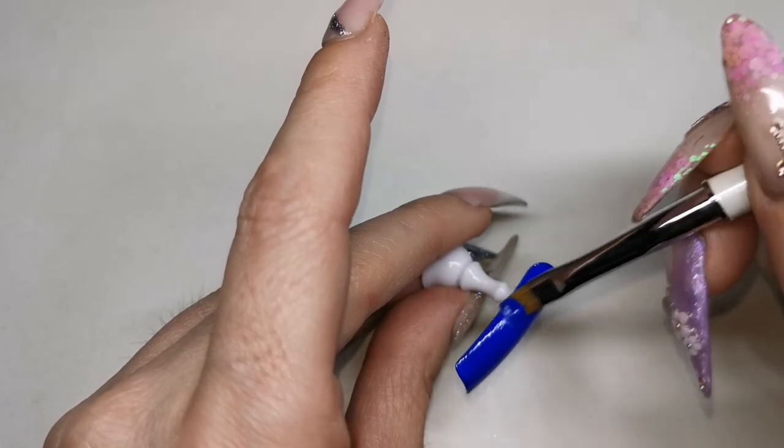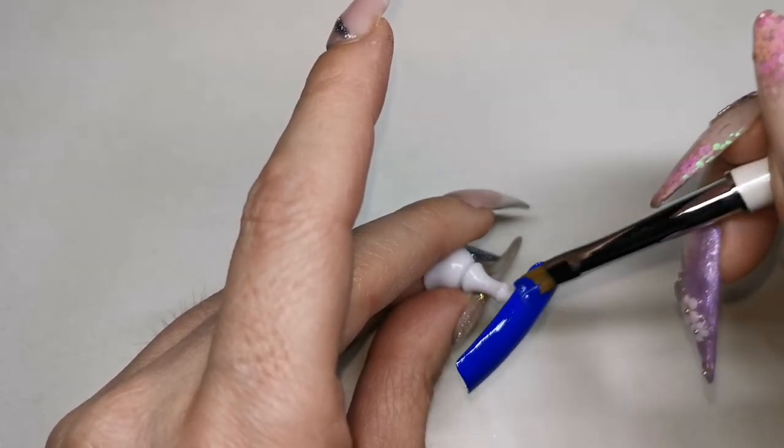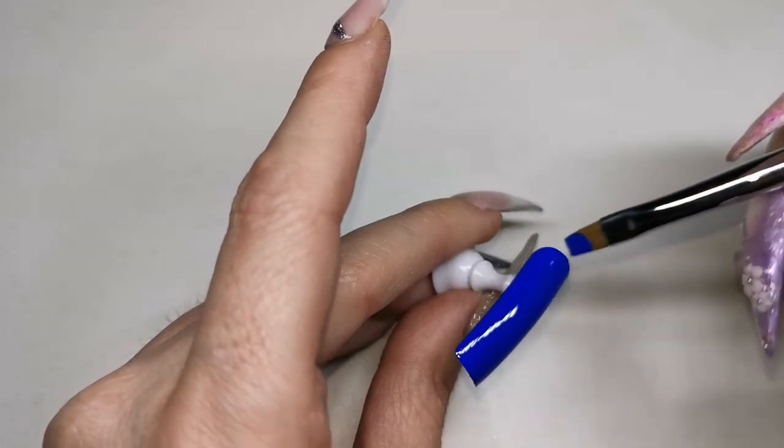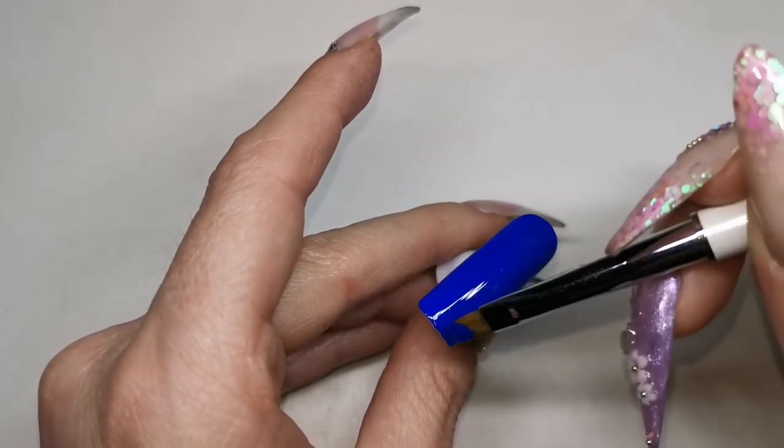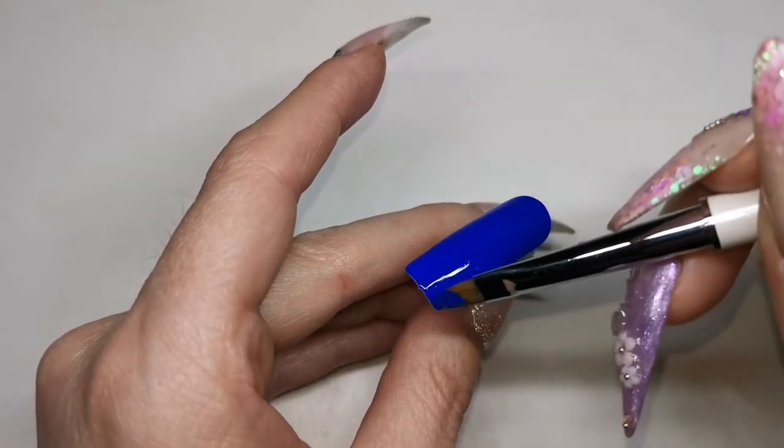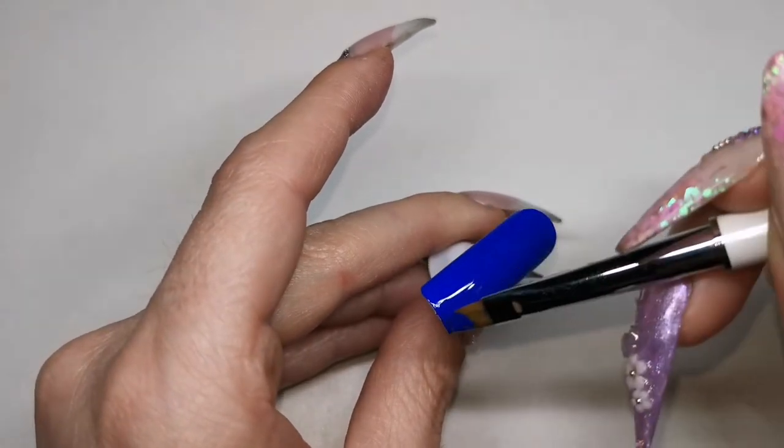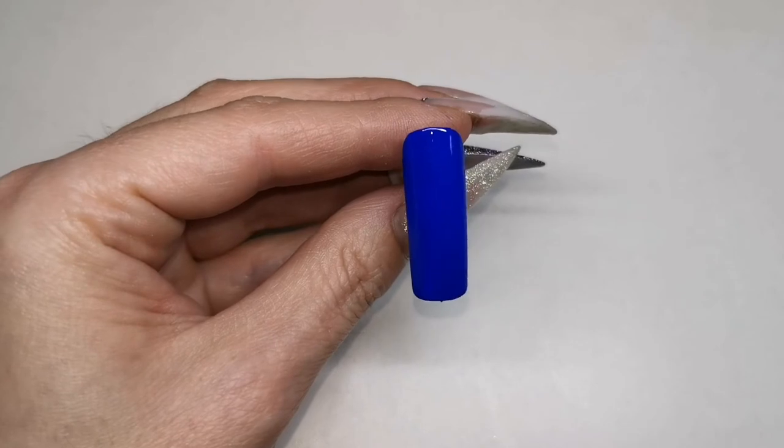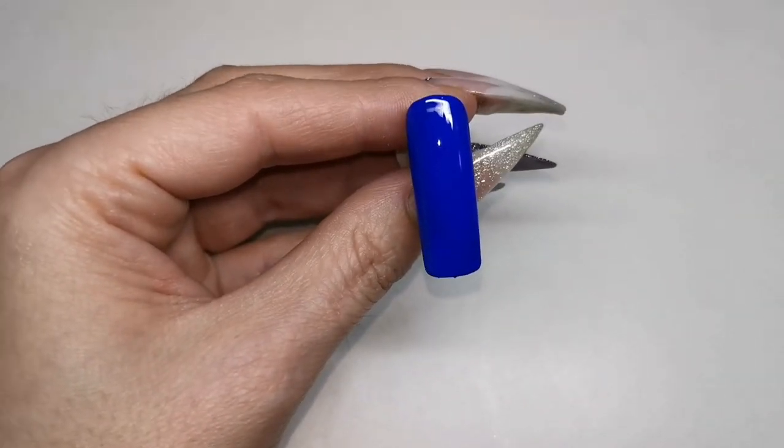I have got a couple of blues but they're not quite the right shade, so I thought for it all to match I'll just paint it with the gel paint. I like about these gel paints, you haven't got to use them for nail art, you can use them as full cover colors as well. Pop that in the lamp to cure for 60 seconds.